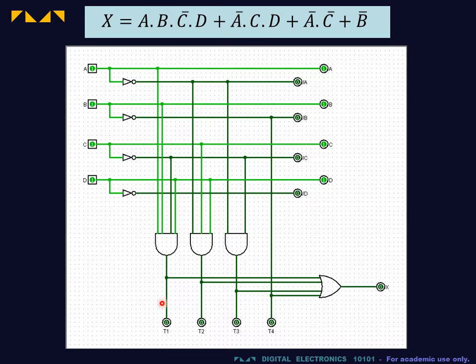Once we have completed all the product terms, we construct the output by linking together all the product terms using an OR gate.